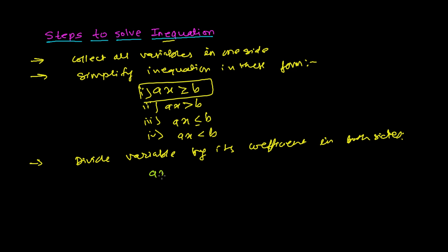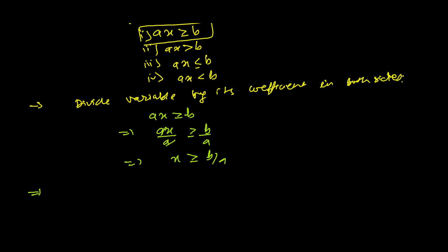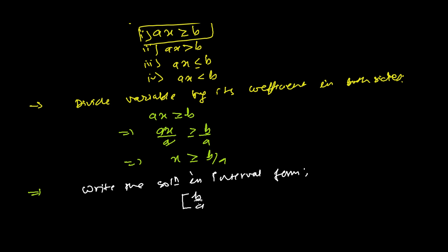For example, if we have AX ≥ B, then in the next step we divide both sides by A: AX/A ≥ B/A. The A's cancel, giving us X ≥ B/A. Then we write the solution in interval form: X represents all numbers equal to B/A and bigger, going till infinity. We use an open bracket for infinity since we cannot include it.